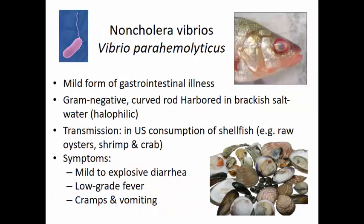Non-cholera vibrios — Vibrio parahemolyticus — cause a mild form of gastrointestinal illness. It is a gram-negative curved rod, harbored in brackish saltwater where salt and fresh water mix, making it halophilic and able to withstand higher salt concentrations. Transmission in the U.S. is through consumption of shellfish, especially raw oysters, shrimp, and crab. Symptoms include mild to explosive diarrhea, low-grade fever, cramps, and vomiting.